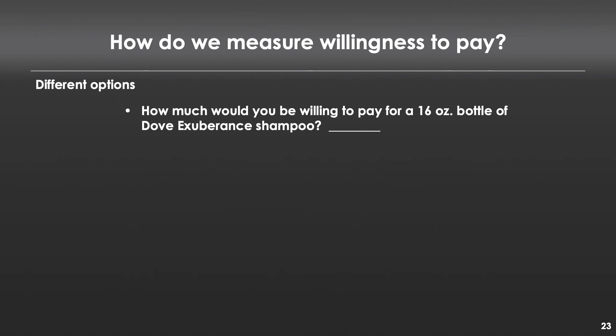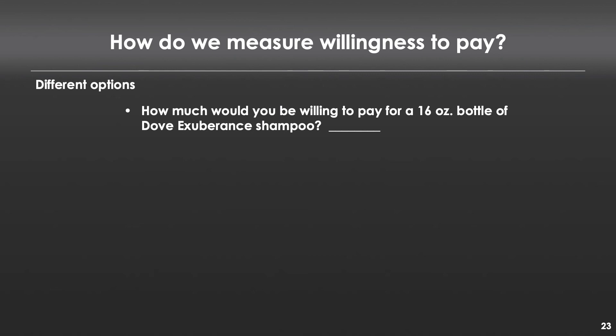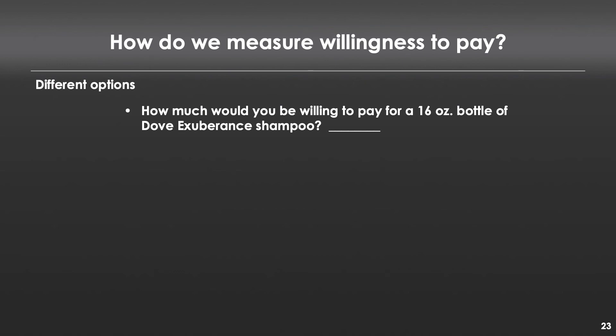Now we'll pivot quickly to measuring willingness to pay — other courses at Tepper like New Product Design cover this quite well. Here's an example: 'How much would you be willing to pay for a 16 ounce bottle of Dove Exuberance shampoo?' The challenge is if you're not a customer of this category, you have no idea. I buy the same shampoo on Amazon auto-repurchase — it just comes to my door, I don't even know what I spend on it. So if you ask me and I'm ill-informed, I'm just going to give you a random answer. When asking open-ended willingness to pay questions, you need to be highly sensitive to the level of information individuals have when they respond.